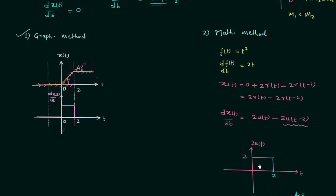The waveform is the same as what we obtained with the mathematical method. You can see the graphical method is very easy to implement and takes much less time. In the mathematical method, you first obtain the expression, then perform the differentiation, then plot the waveform — so there are more chances of making a mistake. Follow the graphical method whenever you have a signal related to ramp and step.